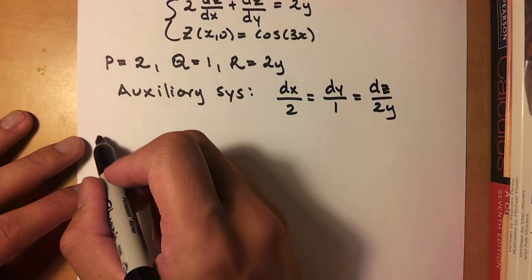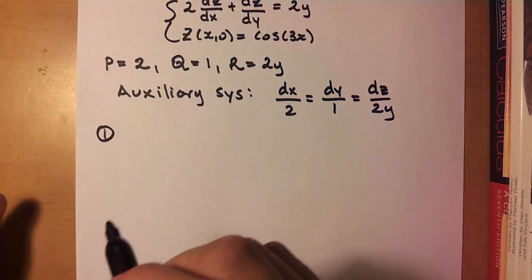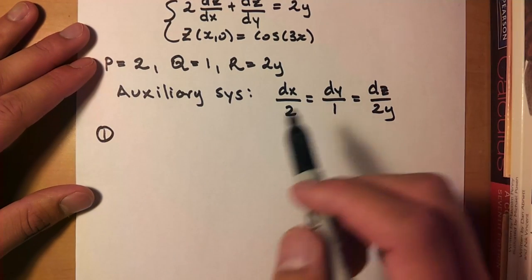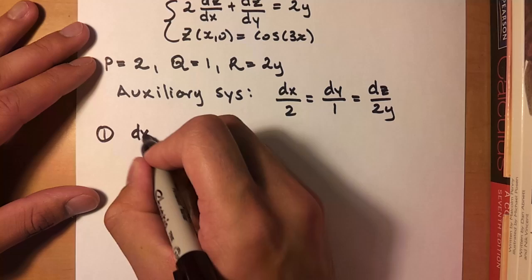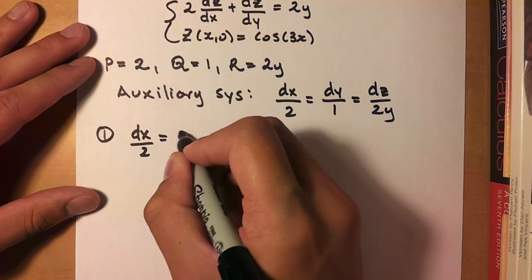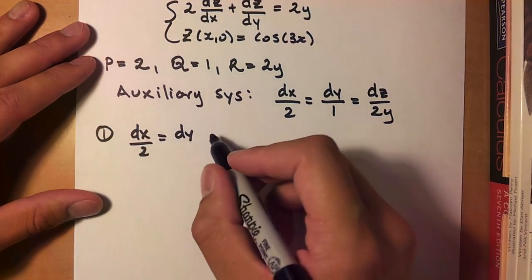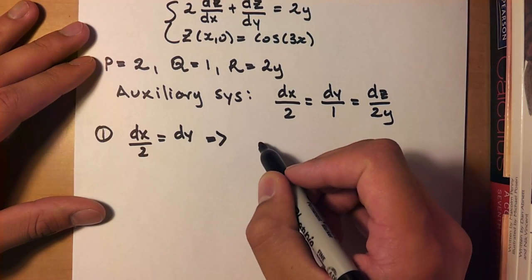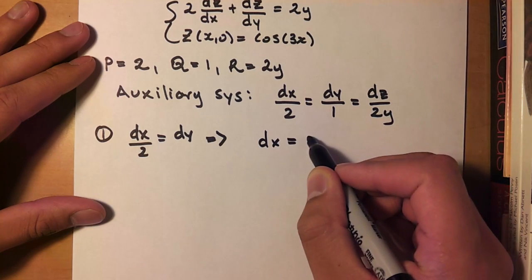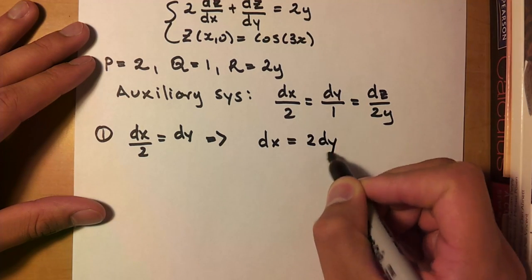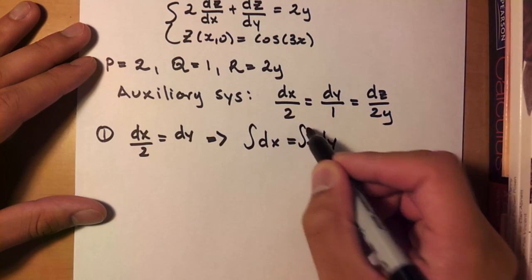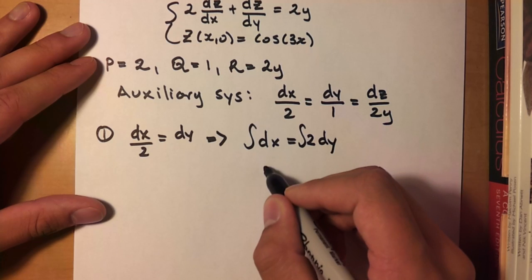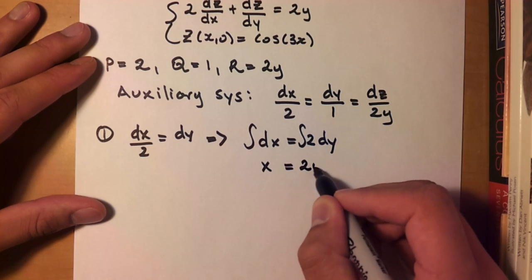Alright, so the next thing we have to do is we have to solve for them. Solve for x, y, and z. So we have these two equations here. Let's just start with them. They look pretty nice. So you have dx over 2 is equal to dy. And we can simplify that a little bit by having dx equaling 2 dy. And then we just integrate, so we can find x and y. So then we have x here, which is equal to 2y.